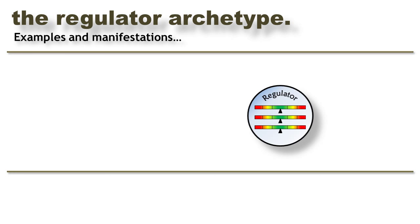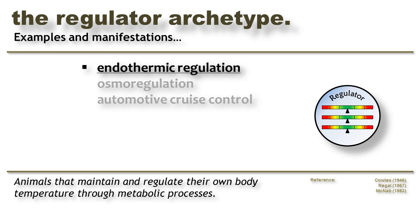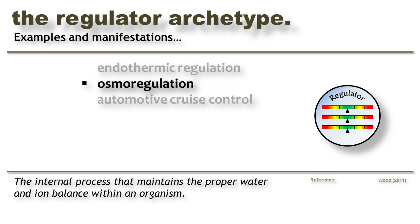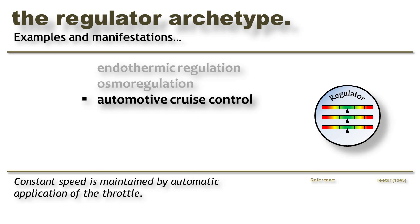The Regulator archetype is common in biological systems and can be observed in the process of endothermic regulation, where animals use metabolic processes to maintain and regulate their body temperature. Another example is osmoregulation — the process that biological systems use to regulate their water balance and keep their fluids from becoming too diluted or too concentrated. A simpler example of the Regulator is automotive cruise control, where the control system automatically adjusts the throttle to maintain a constant speed.